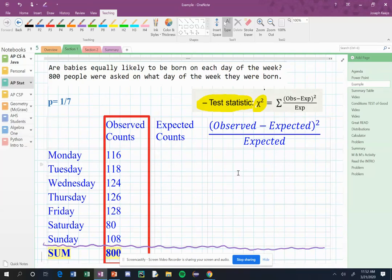Okay my people, we are back. Let's do a small example here on practicing calculating our chi-squared statistic. We do have a goodness of fit example here. How can we tell? Well, the question is: are babies equally likely to be born on each day of the week?